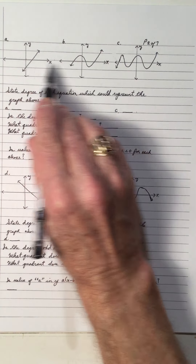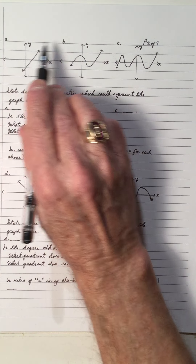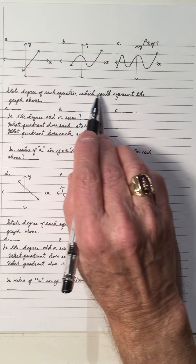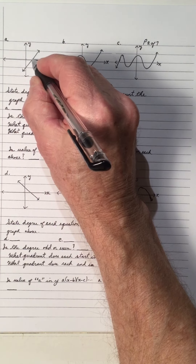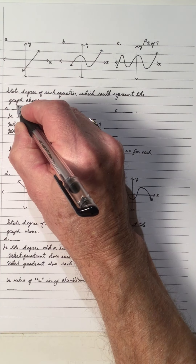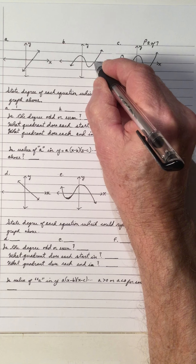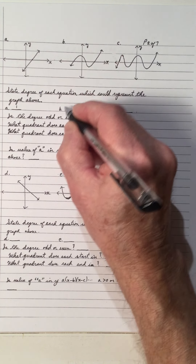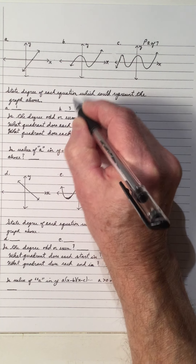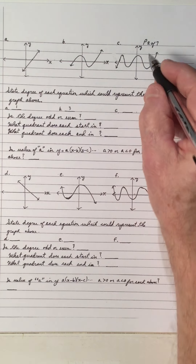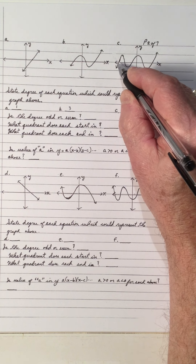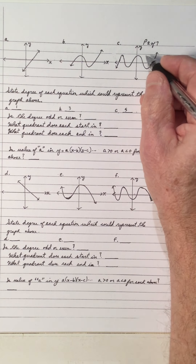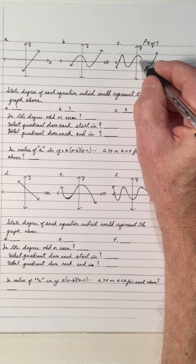I have three graphs here, A, B, and C. It says to state the degree of each equation which could represent the graph above. There is one x-intercept on A, so the degree is one — linear. There are three x-intercepts on B, so the degree is three — cubic. There are five x-intercepts on C, so the degree is five — quintic.